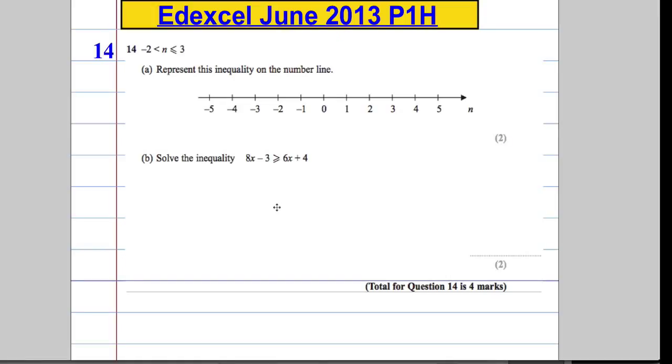Question 14: negative 2 is less than n is less than or equal to 3. We're asked to represent this inequality on the number line. You might think about it like this - I can separate this inequality and